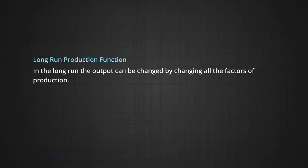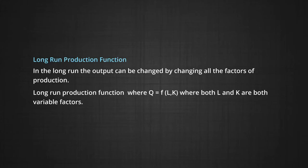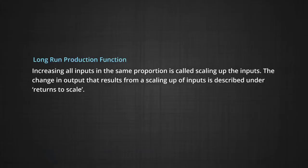We now turn to the long run production function. In the long run, output can be changed by changing all the factors of production. A long run production function is also described as Q equals F of L and K. In this case, both L and K are variable factors. As all the factor inputs are variable in the long run, the ratio between various inputs can remain the same at different levels of output. Increasing all inputs in the same proportion is called scaling up the inputs. The change in output that results from a scaling up of inputs is described under returns to scale.